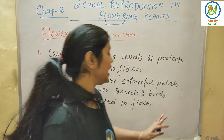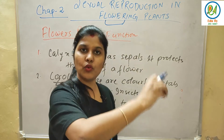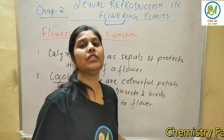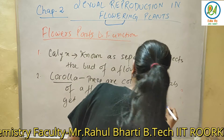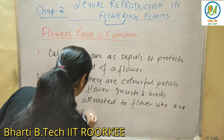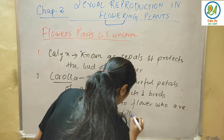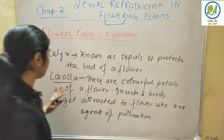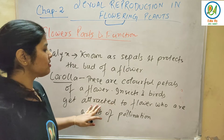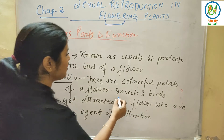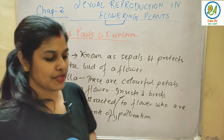That colorful attraction helps in pollination. Insects and birds get attracted to the flower, and they become the agents of pollination. We will study pollination in detail later. So corolla — colorful petals — attract agents of pollination.